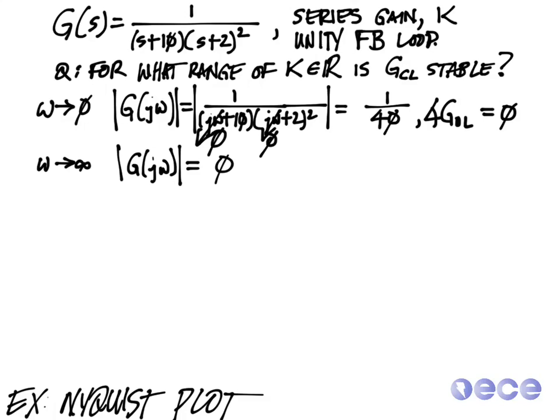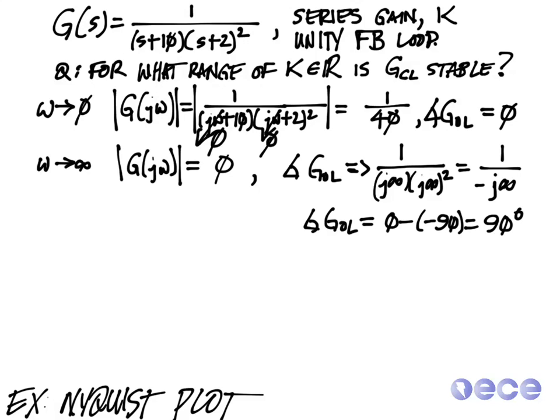So as we let omega trend to infinity, we see that we have 1 over infinity, so the gain is 0. And the angle is 1 over j infinity times j infinity squared. I'm being a little loose with the notation here. This works out to be 1 over minus j infinity. So minus j is an angle of minus 90, but it's in the denominator, so this gives us an angle of 90 degrees as omega tends to infinity.